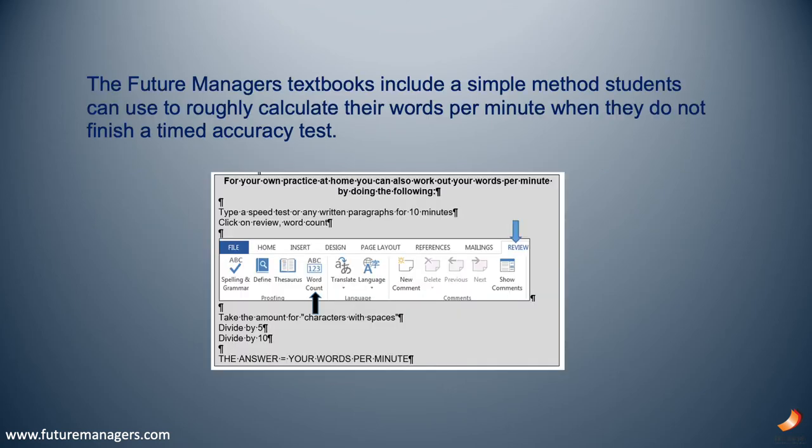Speed and accuracy tests must be practiced daily. Sometimes when students do a speed or timed accuracy test, they don't reach the required speed for N4 level, which is 35 words per minute. The Future Managers textbooks include a simple method students can use to roughly calculate their words per minute when they do not finish a timed accuracy test.